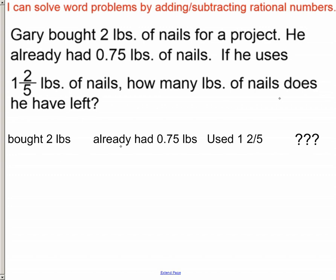Well, he bought two pounds and he already had this, so we should add these two together so that way we know how many nails that he had. And then he used, well, that means that we're going to be subtracting this amount from how many nails that he had, and then hopefully it'll give us the answer of how many was left over.